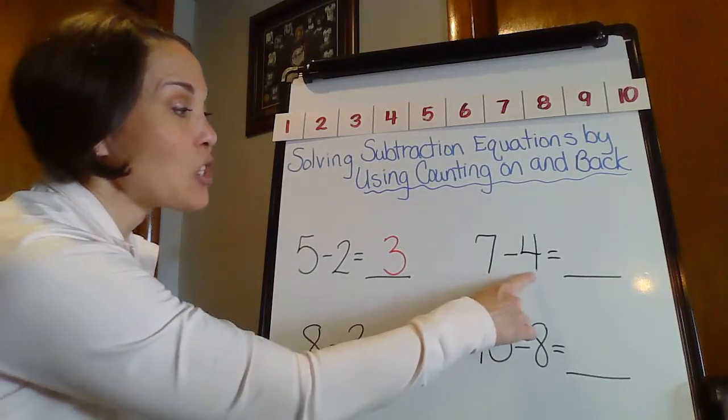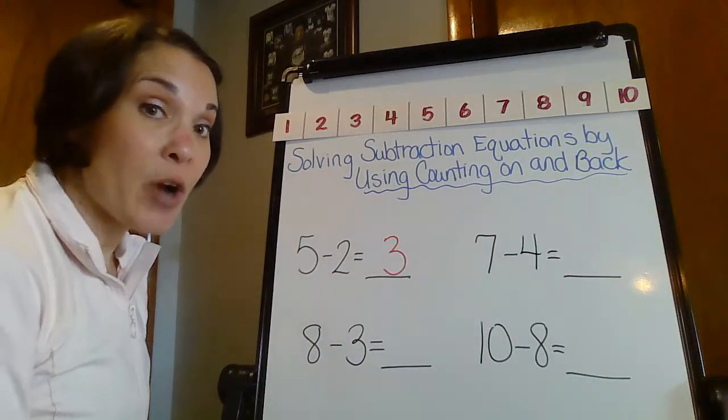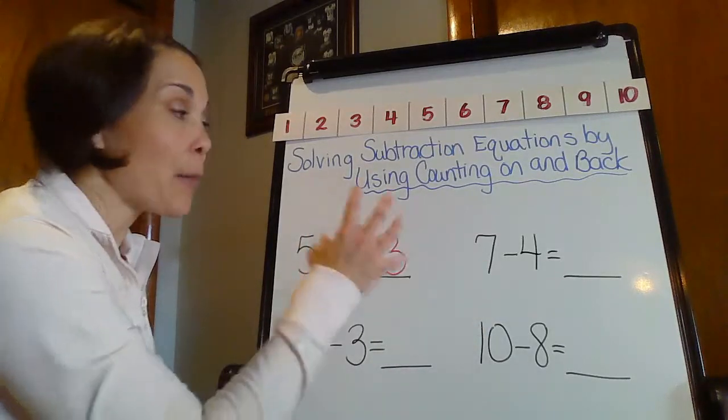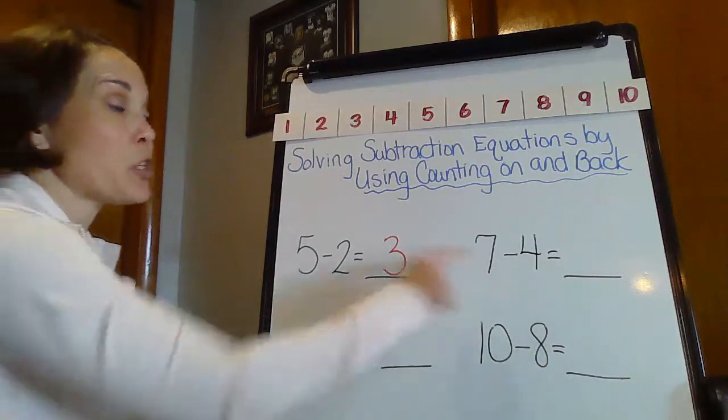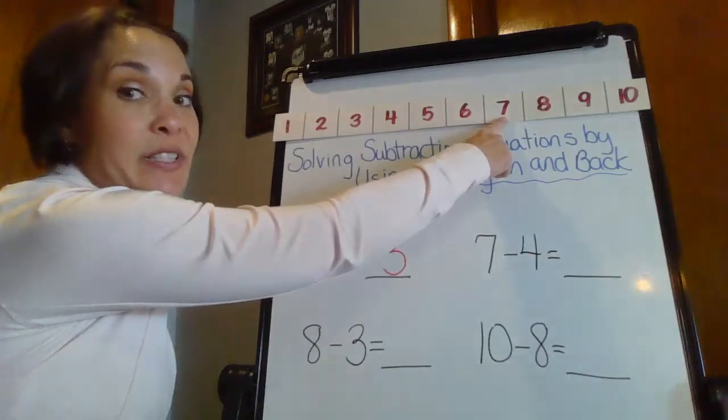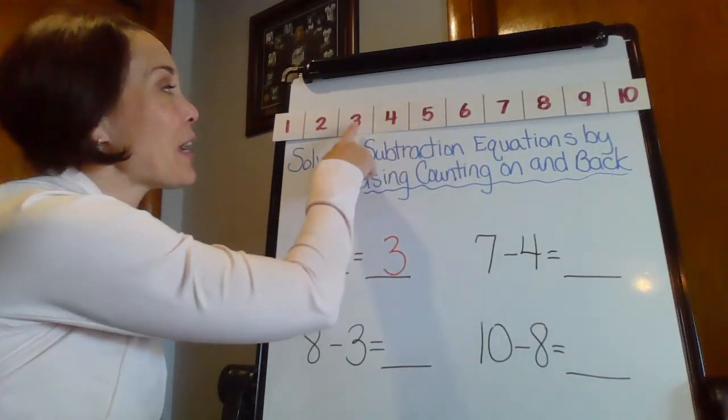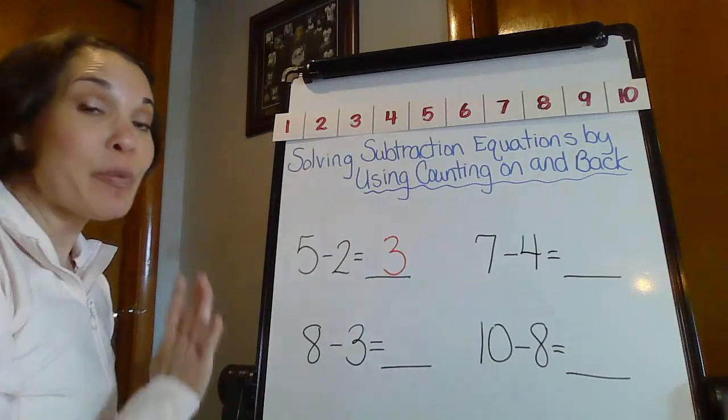Let's do seven minus four equals. So let's do the counting back strategy first. So I'm going to start with that whole piece. I'm going to start with the whole and count back what that part is, which is four. So I'm going to start with seven, count back four, one, two, three, four, and I end on a three. So that should be my difference.